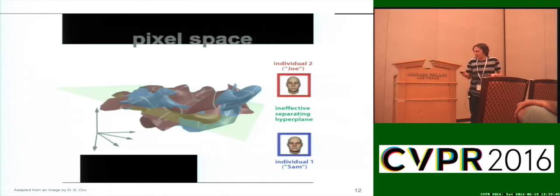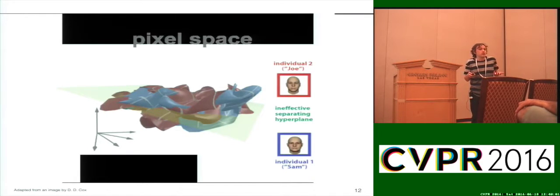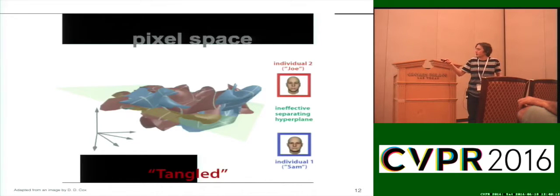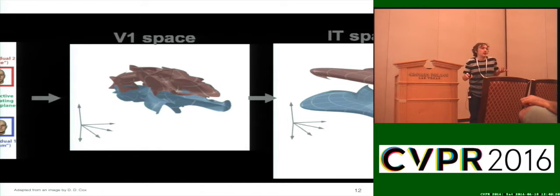The problem deep learning is meant to address is really feature representation. We want features because in pixel space we have a lot of entanglement — pixels are corrupted with noise, and we want to extract invariant features. V1-like features would be SIFT, HOG, LBP — all the things we used before deep learning. They worked, but there's still some entanglement. With deep learning we get very, very good separation with learned invariant features.